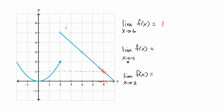Now let's do this next one: the limit of f of x as x approaches four. As we approach four from the left-hand side, it looks like the value of our function is approaching three. Remember, you can have a limit exist at an x value where the function itself is not defined. If you asked what is f of four, it's not defined. But it looks like when we approach from the left, f is approaching three. And when we approach four from the right, once again it looks like our function is approaching three.